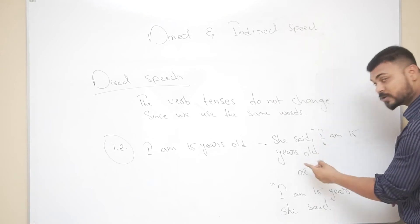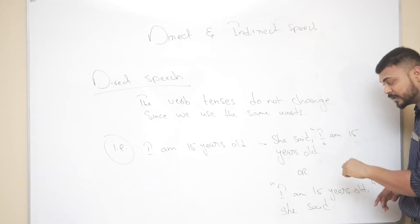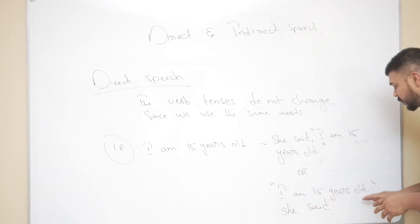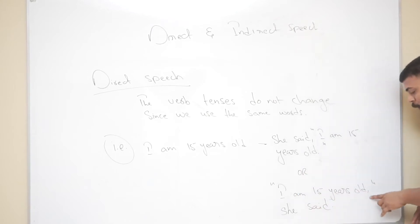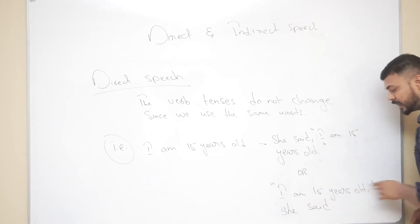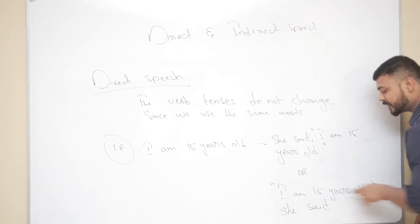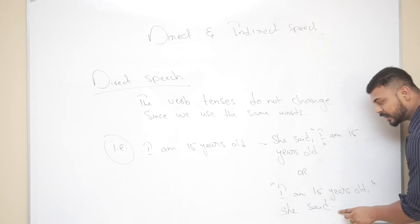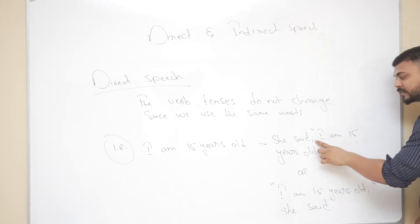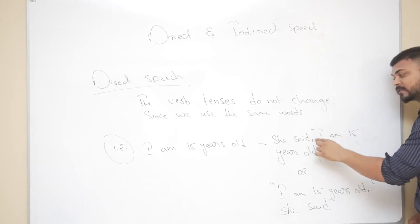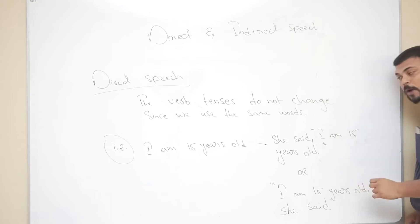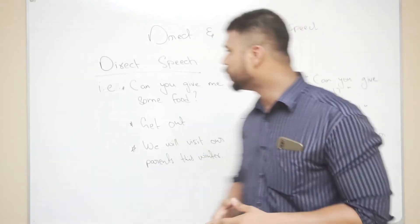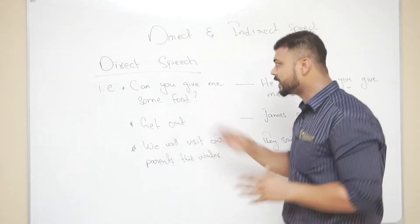The full stop is inside the quotation marks, not after them. In the second form — 'I am 15 years old,' she said — the comma and quotation marks come right after the quoted sentence, covering the entire sentence. The full stop comes at the end because the sentence ends there. Where the sentence is continuing, there is a comma instead.